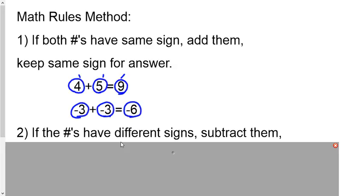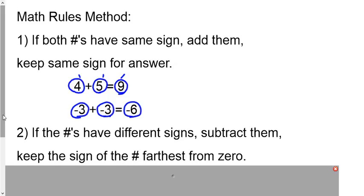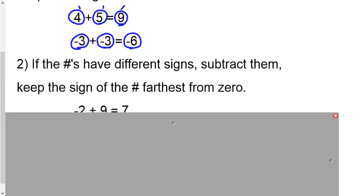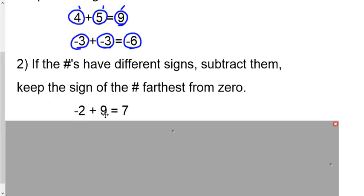Now, what do we do if they have different signs? If the numbers have different signs, this is going to blow your mind, but let's just subtract them. And then, we'll keep the sign of the number furthest from zero. Negative 2 plus 9 equals 7. Well, they have different signs here. So let's subtract them. Well, 2 minus 9 is kind of icky. So let's do this. The 9 just seems to be bigger, so let's just say 9 minus 2. What's 9 minus 2? 7. Now, ask yourself this question. Which of these two numbers is furthest from zero? Negative 2 is only two spots away from zero. 9 is 9 spots from zero. So this number is definitely furthest away. It's a positive number, so my answer is going to be positive.